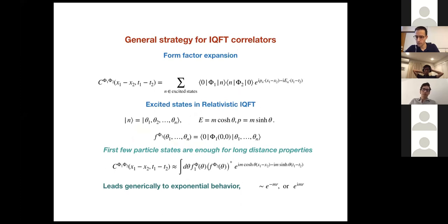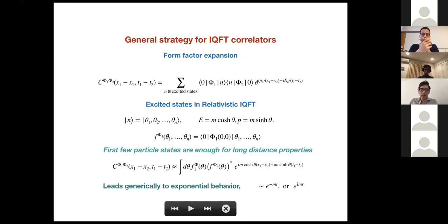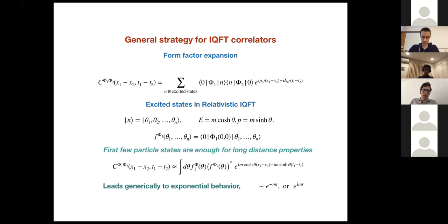There is a general strategy to compute this kind of correlator in an integrable field theory, which is the form factor expansion. You insert between the two operators a complete set of eigenstates of your theory, and there are nice things afforded by relativistic invariance — you can parameterize the x and t dependence in a nice relativistic way depending on the momentum and energy of these eigenstates.